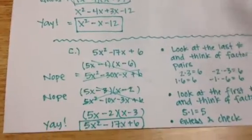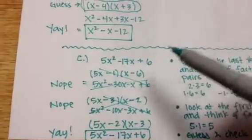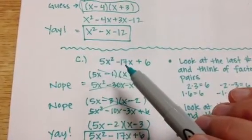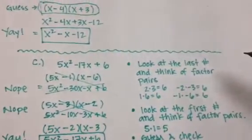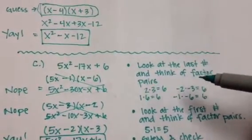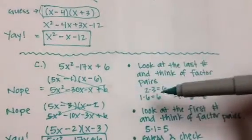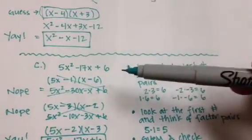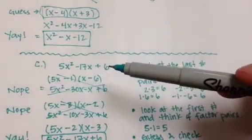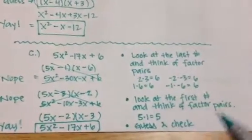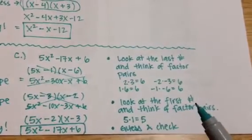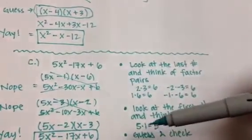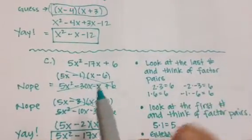And then let's see here. So the next and last example, if you have a number in front of the x squared, like 5x squared minus 17x plus 6, you're going to look at the last number first and think of its factor pairs. So I know that 2 times 3 is 6, negative 2 times negative 3, or I could have combinations of 1 and 6 to get a positive 6. And then you're going to look at the factor pairs of the first number. So I look at this 5, and I know that 5 times 1 is 5. And then you're playing the guess and check game again.